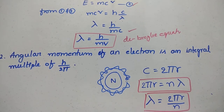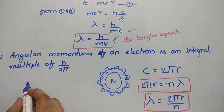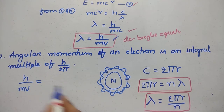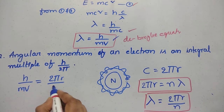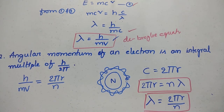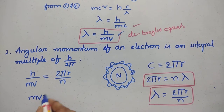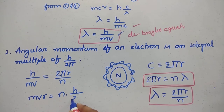Now I am talking about lambda equal to 2 pi r. I am going to substitute the De Broglie equation, lambda equal to h by mv, and use lambda equal to 2 pi r by n. From the left-hand side, we have the important relation: mvr equal to n into h by 2 pi.